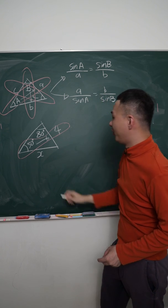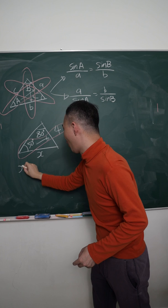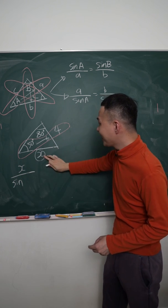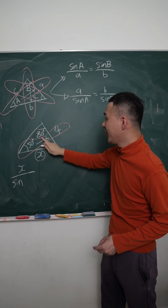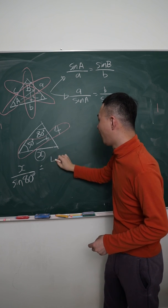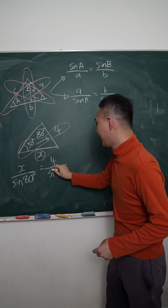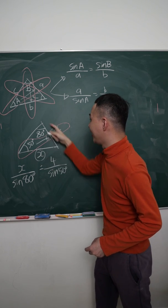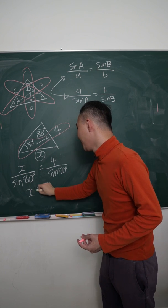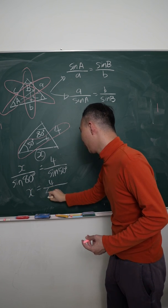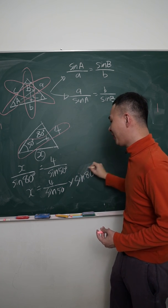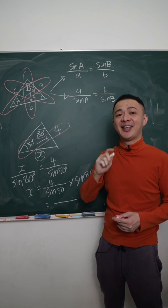Because length is on top, I write: X over sine of 80 degrees equals 4 over sine 50 degrees, because 80 degrees is the angle opposite X, and 50 degrees is the angle opposite the length 4. Then use your calculator: 4 divided by sine 50, multiplied by sine 80 degrees, and you will easily get the answer.